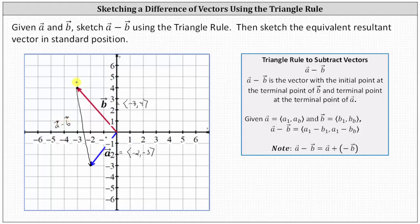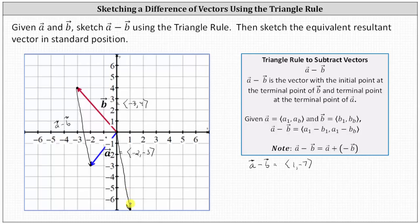Notice the resultant vector has an x component of positive one and a y component of negative seven. They also want us to sketch the equivalent resultant vector in standard position, so we'll sketch the same vector with the initial point at the origin. Because we already have the component form, we move right one unit and down seven units. This is the same resultant vector in standard position.